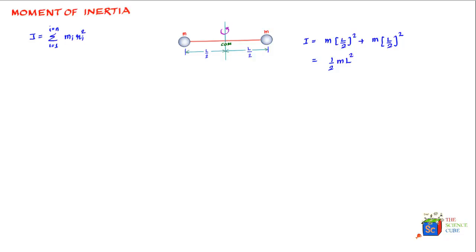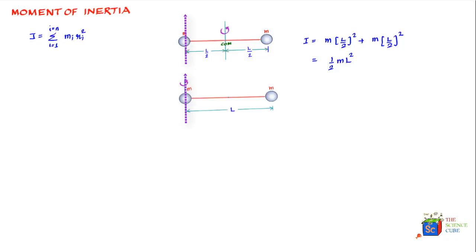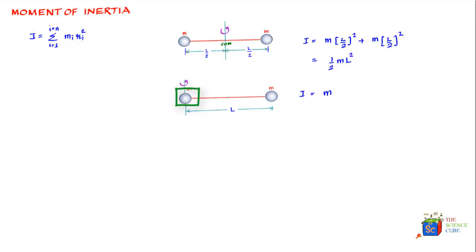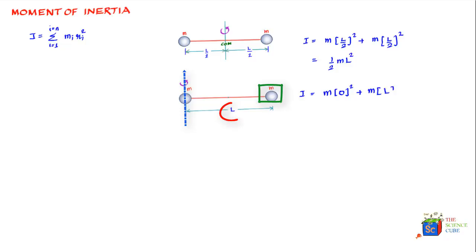Now let's say the axis of rotation is moved to one of the masses. To find the moment of inertia about this new axis, we apply the formula. The first mass has distance zero from the axis, so its contribution is zero. The second mass is now at distance l, so I = m·0² + m·l² = ml². Note that this distance is always a perpendicular distance.